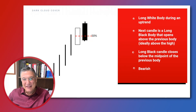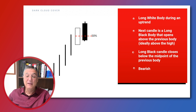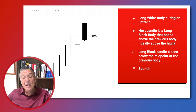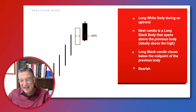Hello traders and welcome to the dark cloud cover educational video. Let's start with the specs of this popular bearish pattern. It consists of a long white body during an uptrend at the top area of the uptrend, followed by a long black body that opens above the body of the previous candlestick. It opens above the white body — ideally above the high price, but that is not part of the spec — and it closes below the midpoint of the long white body. This has bearish implications.